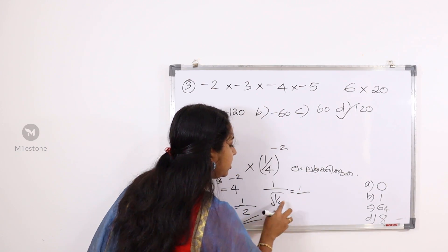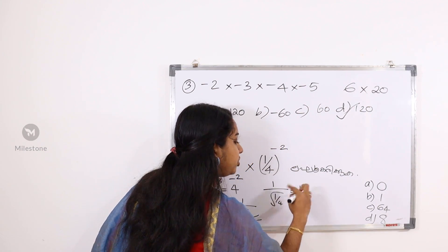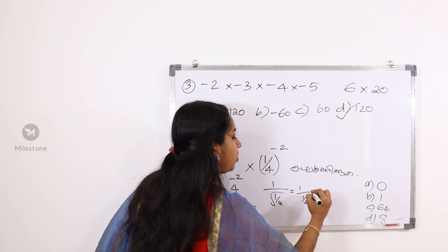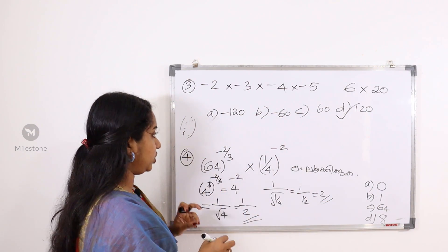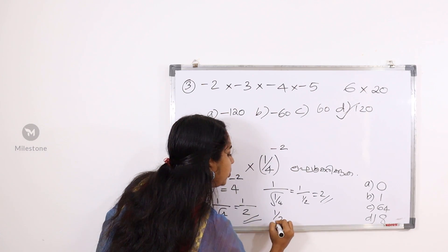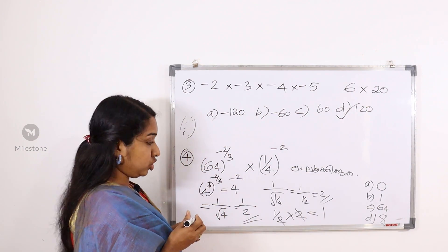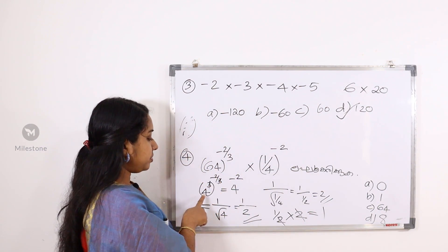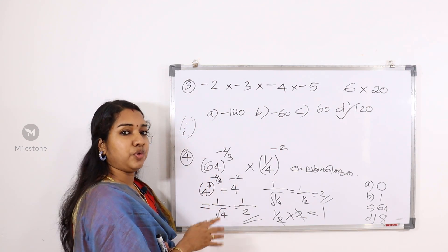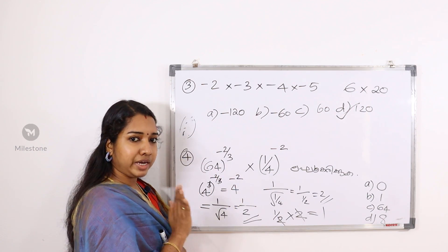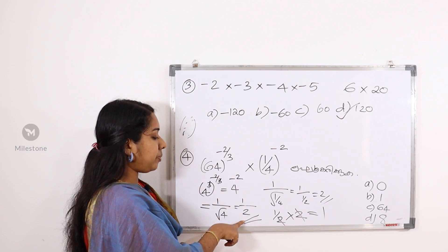1 by root 1 by 4 is 1 by 2. Then 1 by 1 by 2 is 2. Then 2 by 2 is 1 by 2. Going back to the beginning: 4 raised to minus 3 and 4 raised to minus 2. If 4 raised to minus 2 is 1 by root 4, then 1 by root 4 is 1 by 2.